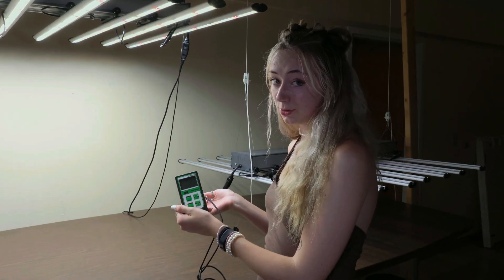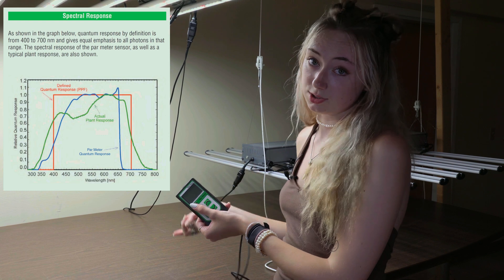This is a PAR meter, and we use it to read the light intensity coming off of our lights and onto the cannabis plants.